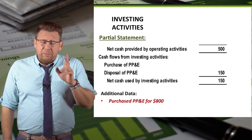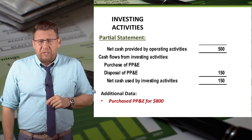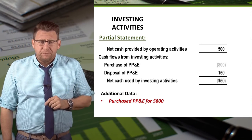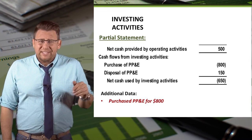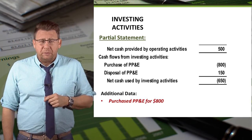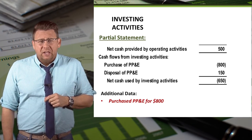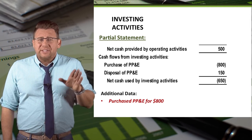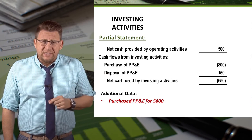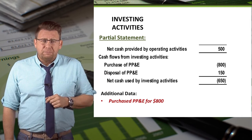The next item is the purchase of PP&E for $800. Since cash is being paid for the purchase of PP&E, $800 is deducted from the Investing Activities section.